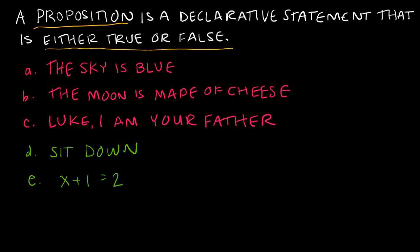The sky is blue is a declarative statement. What we will do is take this statement and say, let's let P represent that statement. Or the moon is made of cheese — also a declarative statement. That could be either true or false; I'm going to say false on that one. And I'm going to say that is proposition Q.